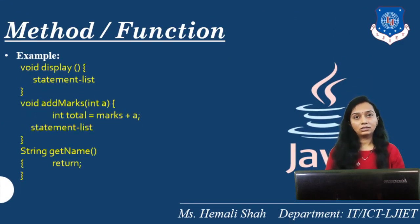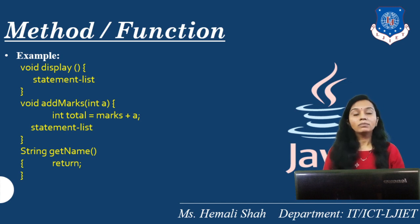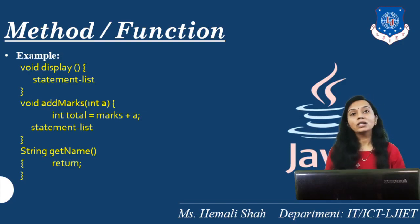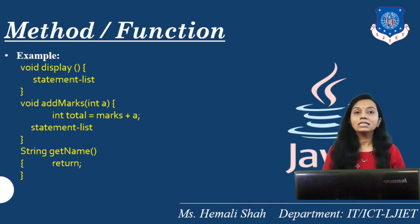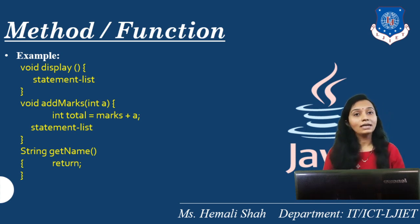Let's take an example of a method. Here, void display is a method having no argument, and the return type is specified as void. You can write statements inside the body of this display function — for example, to print something on the console. The addMarks function has one integer parameter A. You can write statements and declare local variables inside this function. Integer total is a local variable. You can use the argument variable A inside the body of this addMarks function.